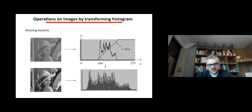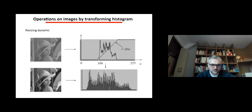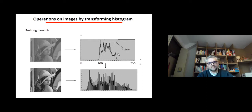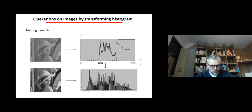When you want to resize the dynamics, the piecewise linear function is useful: if you take an image where gray levels start at 100, you remap that to start at zero, and gray levels ending at a high value are remapped to 255. It's like stretching the histogram to fit the 0–255 dynamic range.